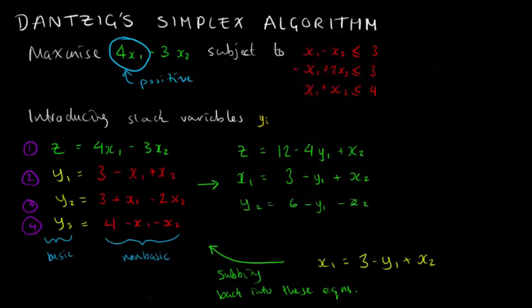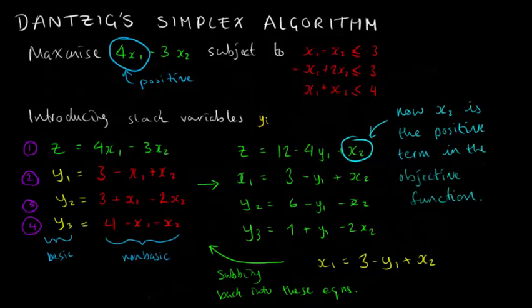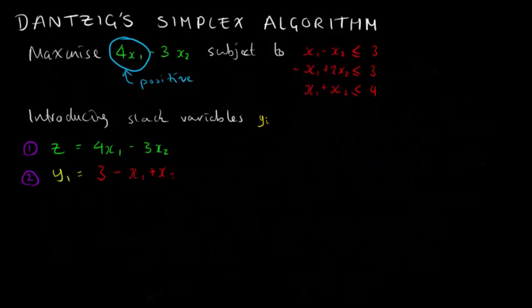So now the basic values are x sub 1, y sub 2, and y sub 3, and our non-basic variables are x sub 2 and y sub 1. This process is called pivoting.